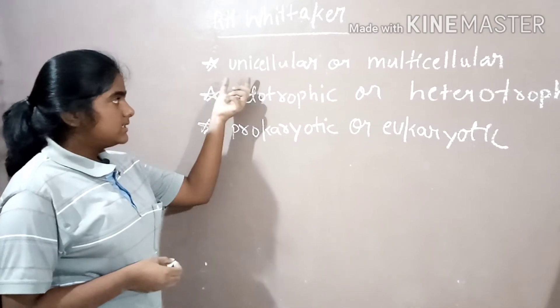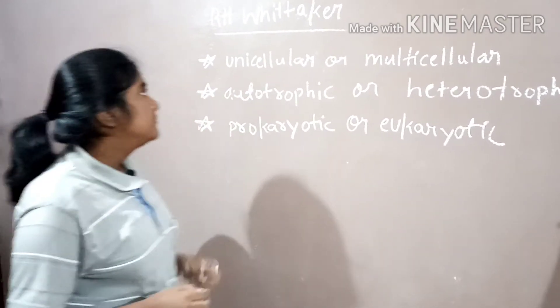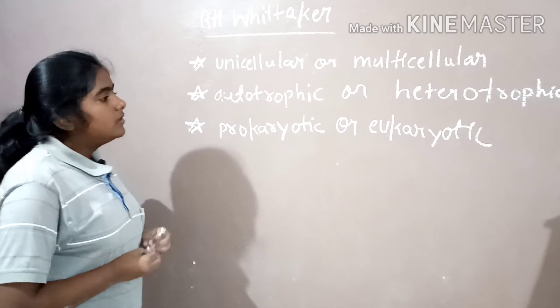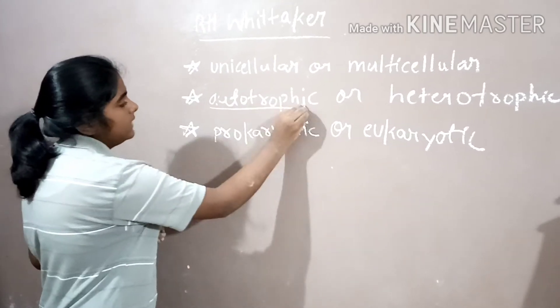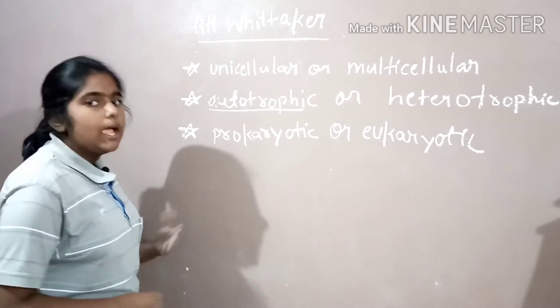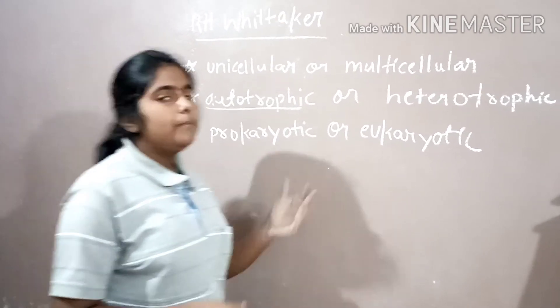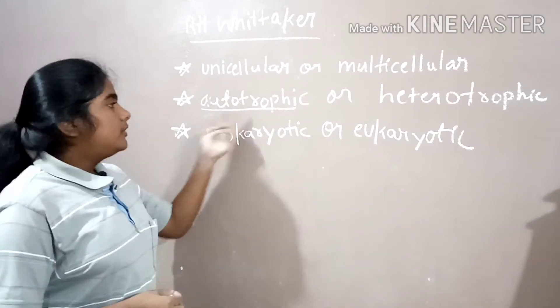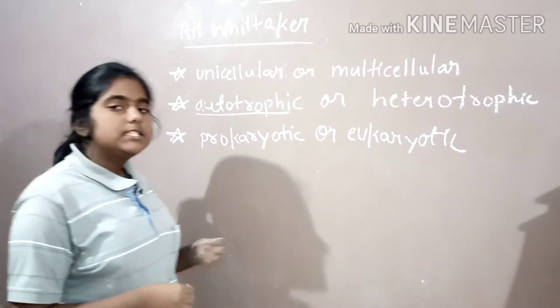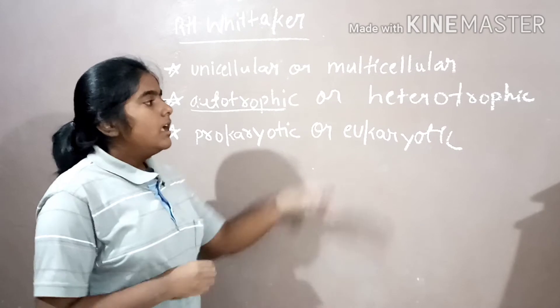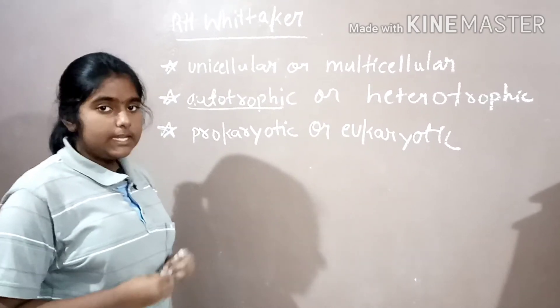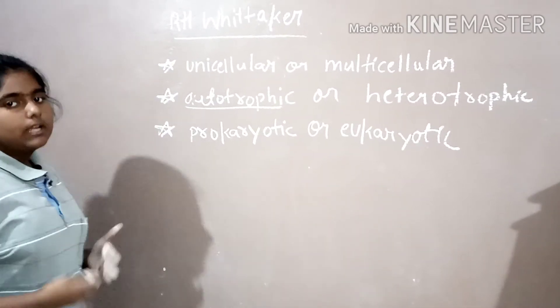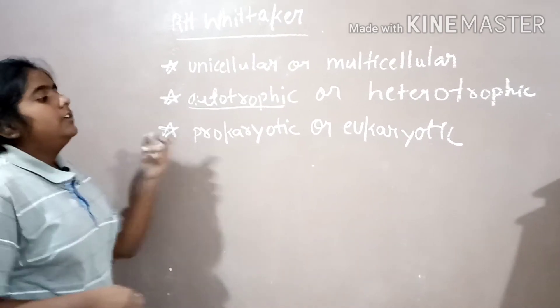The first criteria is unicellular or multicellular, whether the cell is single-celled or multicelled. Second, autotrophic or heterotrophic. Autotrophic means the organism has the ability to prepare its food, heterotrophic means the organism does not have the property to prepare its food. Autotrophic example is plants. Plants make their own food by photosynthesis. Example of heterotrophic are we humans. We are dependent on plants for our food and other living organisms.